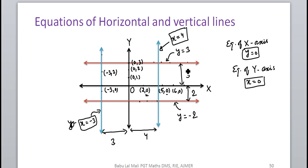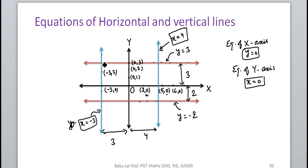If there is a horizontal line, the equation will be y = something — for example y=3 or y=−2. Similarly, if there is a line parallel to the y-axis, the equation will be x = something — for example x=4 if it is to the right, or x=−3 if it is to the left of the y-axis.